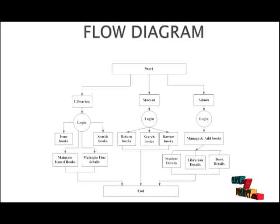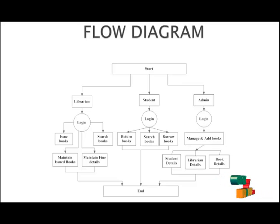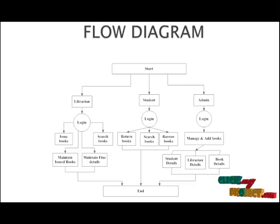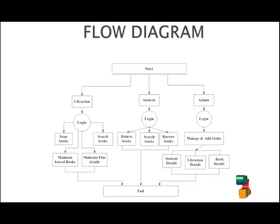Let's see the flow diagram. Our project starts from the start menu, and the library has three types of roles: librarian, student, and admin. The librarian logs into their account and can issue books and search books. The student logs into their account and can return books, search books, and borrow books. The admin can log in, manage, and add books.